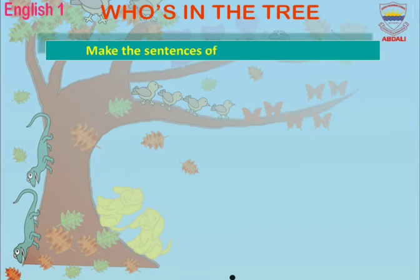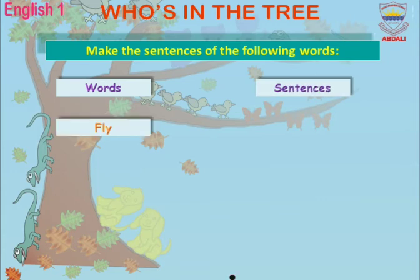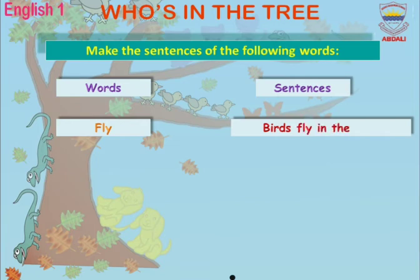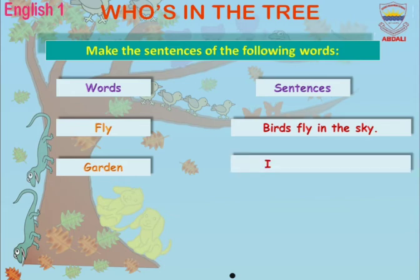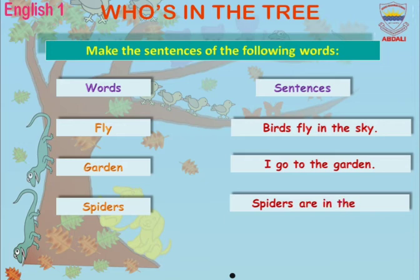Make the sentences of the following words. The first word is fly — Birds are flying in the sky. The next word is garden — I go to the garden. Number three, spider — Spiders are in the web.